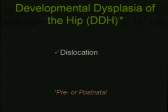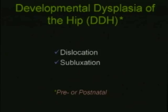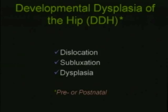In the past, dislocation was the term used for abnormalities of the infant hip. But in 2010, we used the descriptor of developmental dysplasia of the infant hip, which is meant to include all aspects of abnormalities in the development of the hip, including dislocation, subluxation, and dysplasia, whether or not it occurs prenatally or postnatally. This term more accurately describes the pathogenesis of DDH.